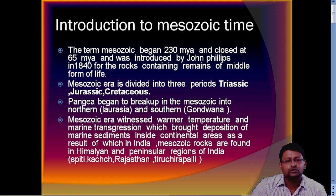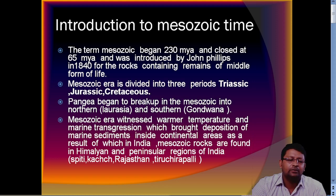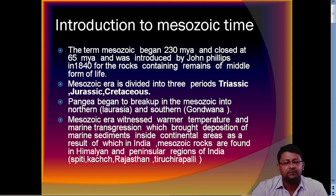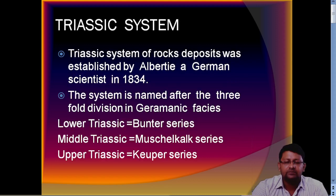There was also marine transgression, which means the sea and ocean water was moving towards the land, creating epicontinental seas and depositing marine sediments. As a result, Mesozoic rocks are found in India in the Himalayas, Himachal Pradesh, and peninsular areas like Spiti, Kutch, Rajasthan, and Tiruchinapalli.